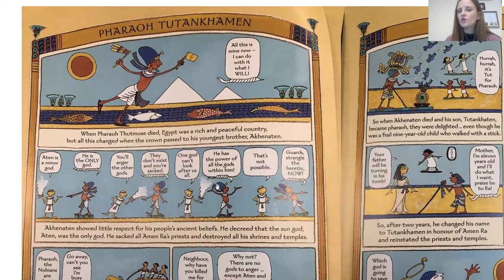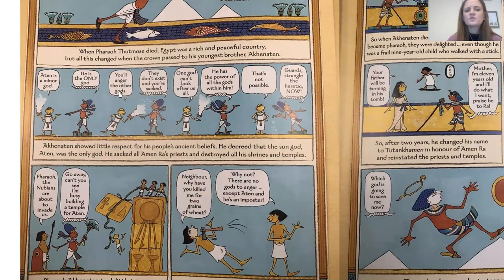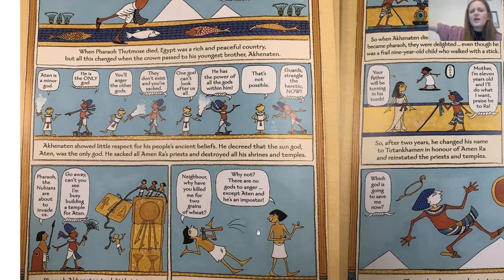Pharaoh Tutankhamun — that is the heading. 'All this is mine now, I can do with it what I will.' When Pharaoh Tutankhamun died, Egypt was a rich and peaceful country. But all this changed when the crown passed to his youngest brother Akhenaten. Akhenaten showed little respect for his people's ancient beliefs. He decreed that the sun god Aten was the only god. He sacked all of Amun-Ra's priests and destroyed all their shrines and temples. 'Aten is a minor god.' 'He is the only god.' 'You'll anger the other gods.' 'They don't exist — and you'll be sacked.' 'One god can't look after all of us.' 'He has the power of all the gods within him.' 'That's not possible.' 'Gods, strangle the heretic now.'